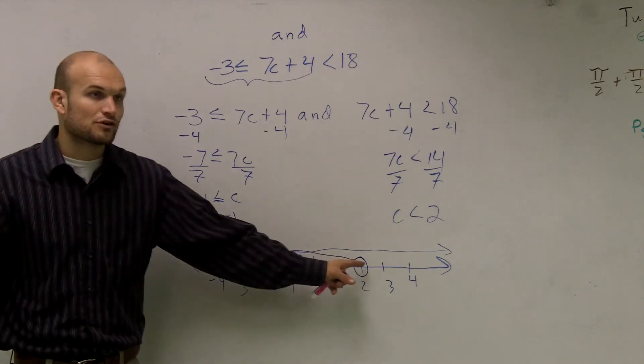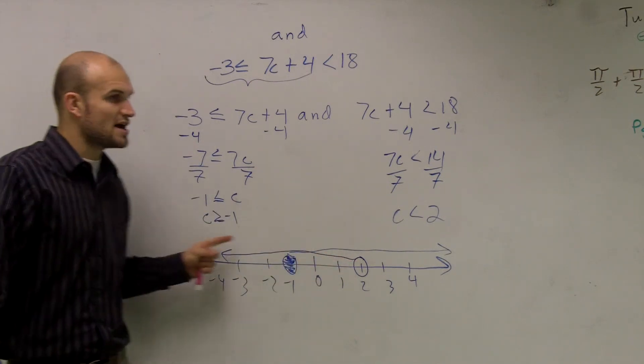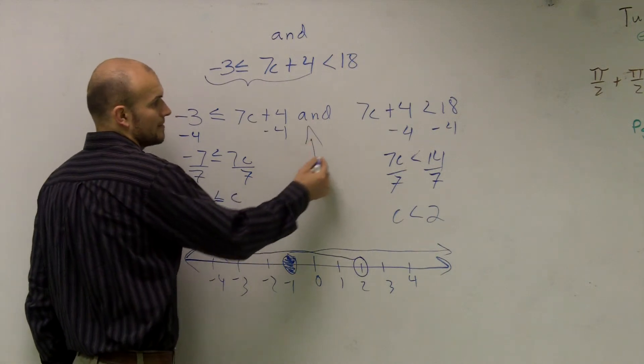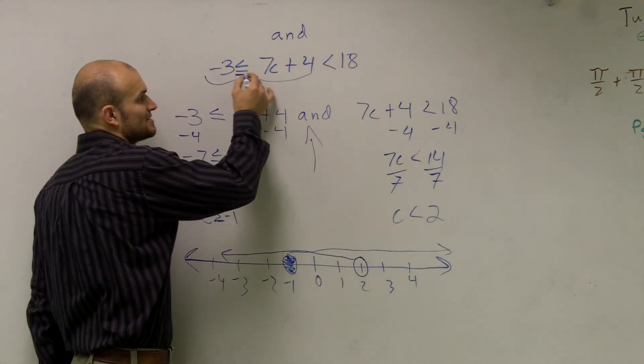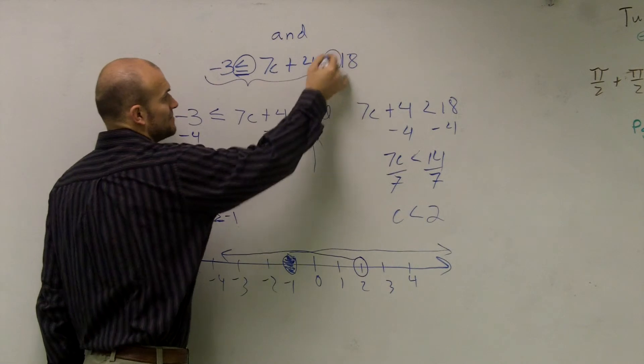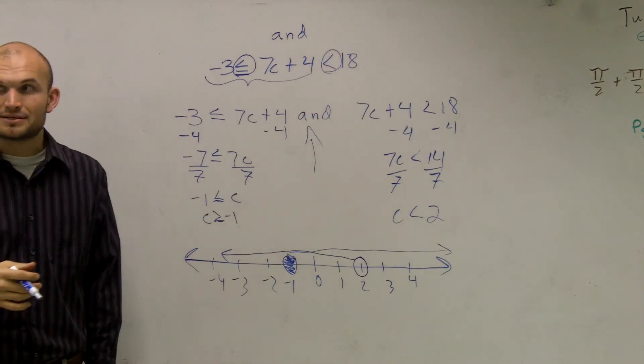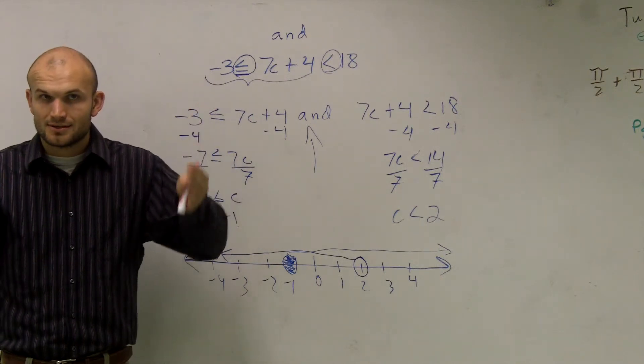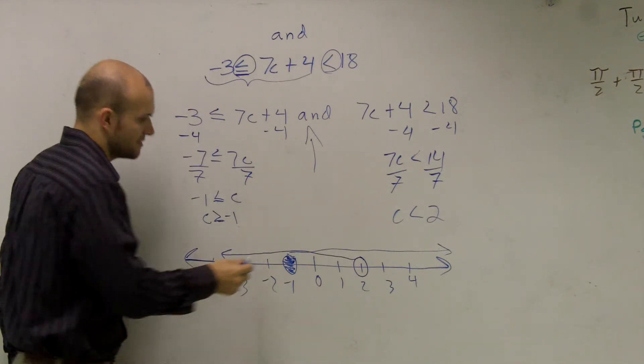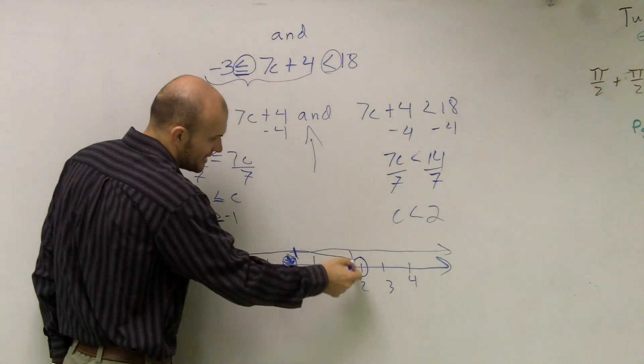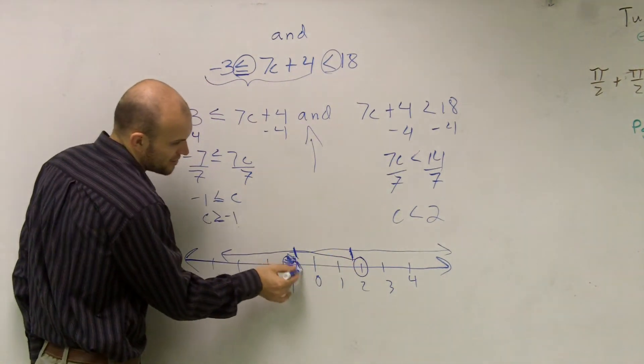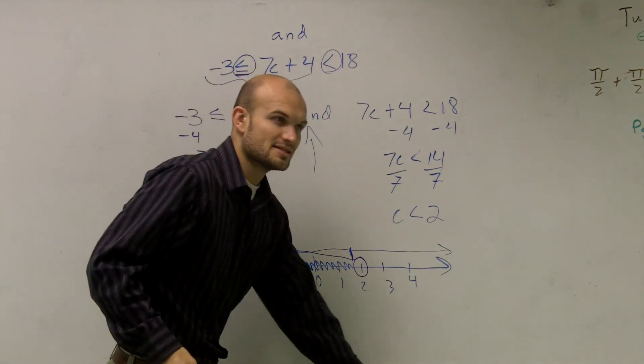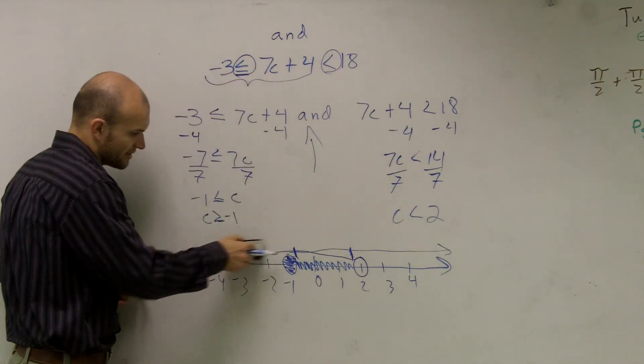So you guys can see I have a graph going infinitely to the left and a graph going infinitely to the right. But since I said whenever you have the same signs going in the same direction, it's an 'and' statement. When it's an 'and' statement, we only care about where the two graphs intersect. So they intersect between the two points. So that's where I'm going to shade my graph, and all the rest of that stuff I did up top we can just forget about.